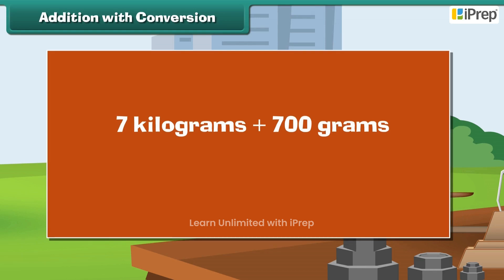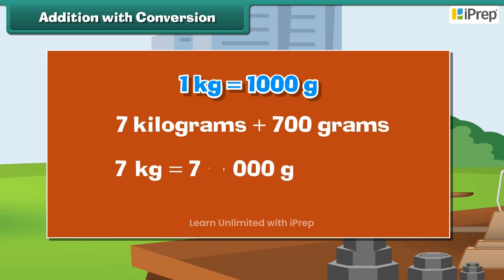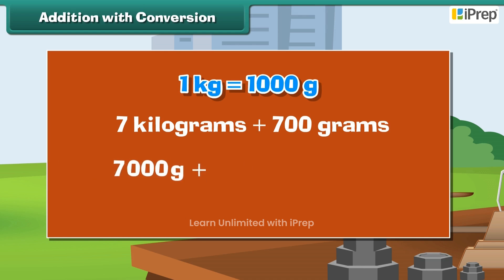Addition with conversion: let us add 7 kilograms with 700 grams. First, convert kilograms into grams: 1 kg is equal to 1,000 grams, so 7 kg is equal to 7 into 1,000 grams, which equals 7,000 grams. Therefore, 7 kg plus 700 grams equals 7,000 grams plus 700 grams, which equals 7,700 grams.